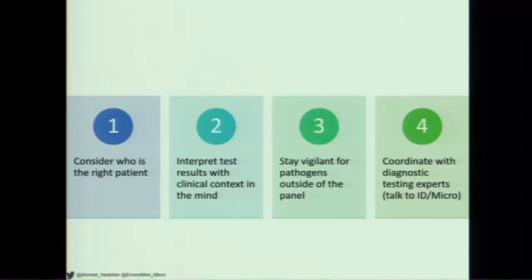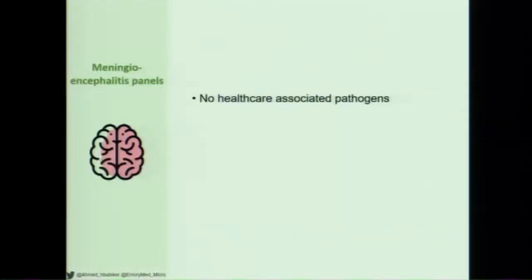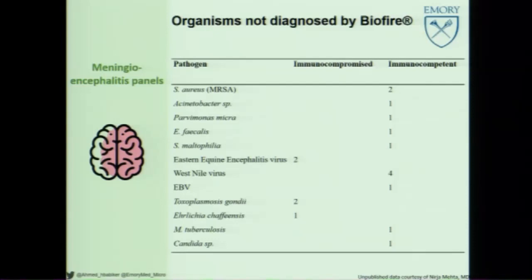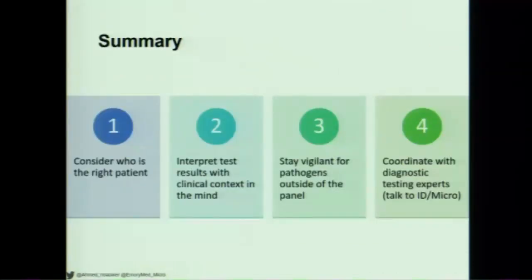Stay vigilant for pathogens outside of the panel. The meningoencephalitis panel did not have tuberculosis, and these tests should be an adjunct to routine testing. Here at our institution, patients who had the meningoencephalitis panel also had a variety of other pathogens identified. If we had only limited ourselves to this narrow testing, we would have missed organisms ranging from Staph aureus to West Nile virus to EBV to Candida. Involve infectious disease and the micro lab to help coordinate testing and offer more targeted, higher-yield alternatives.